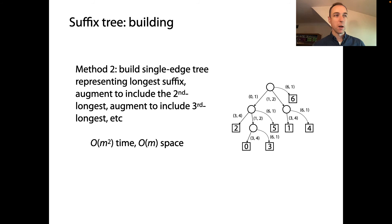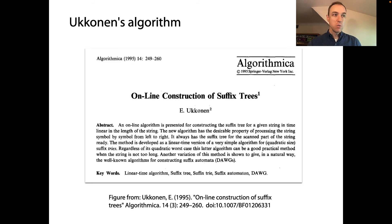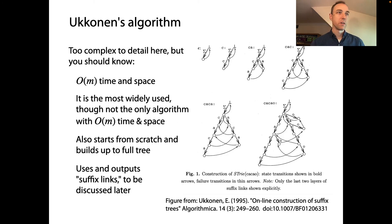So method two, what I'm calling this method that we were just describing, allows us to build the overall suffix tree. We start by building a single-edge tree representing just the longest suffix. And then for subsequent suffixes, we layer in each new suffix, augmenting the tree at each step. This has the property we want on space, but we could hope for better in terms of the time complexity. So how do we accomplish that? Well, there are a few different algorithms for doing this, but one of them is kind of the most famous one, which is Ukkonen's algorithm. This is an algorithm for constructing suffix trees. And I'm showing you here one of the figures from this original paper describing Ukkonen's algorithm from 1995.